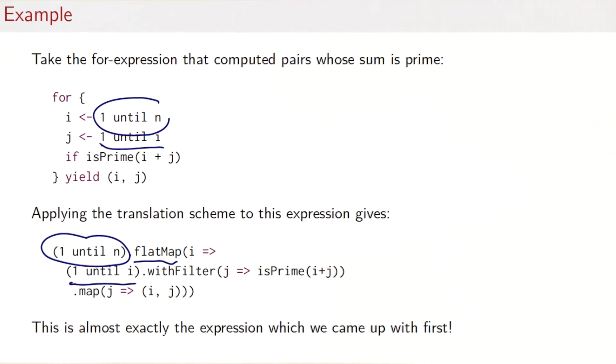What's noteworthy is that this is almost exactly the expression we came up with first. If you compare this to what we had in the last session, you'll find only two differences. One was we use now withFilter instead of filter. We've explained that already. It's just to save on allocations of intermediary data structures.